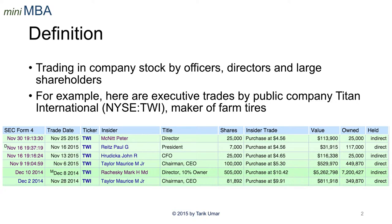Definition. Insider trading is any trading in a company's stock by the company's officers, directors, or influential shareholders. Influential shareholders tend to own more than 10% of a company's stock. To provide an example, consider the trades that I show below. These are for a public company called Titan International, which makes farm tires.